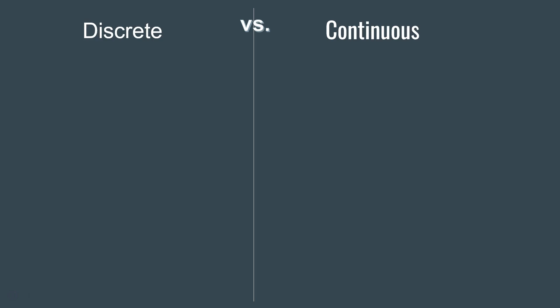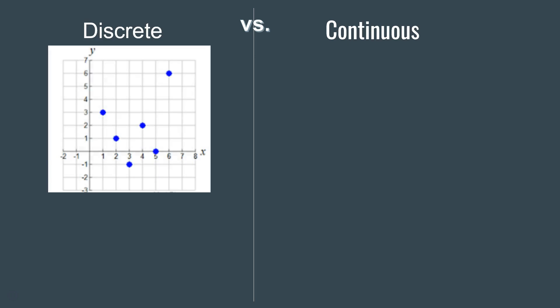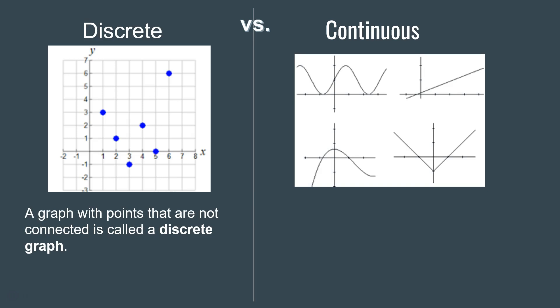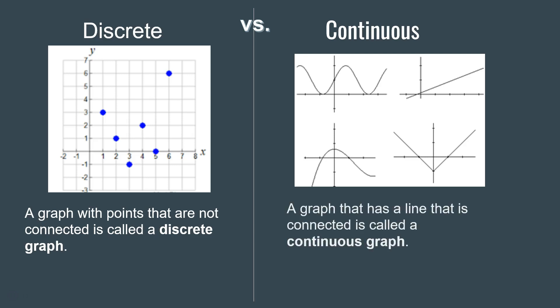Let's look at an example of a discrete graph versus a continuous graph. A discrete graph has points that are not connected, such as ordered pairs. A continuous graph has smooth curves with no breaks or jumps — it's a graph with a connected line that can be drawn without lifting the pencil.